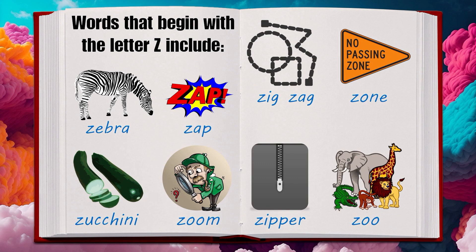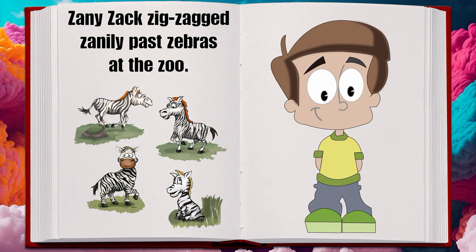Words that begin with the letter C include: zebra, sap, chickeny, zoom, zigzag, sewn, zipper, shoe, sandy, zack, zigzag, sanerly, past, zebras at the zoo.